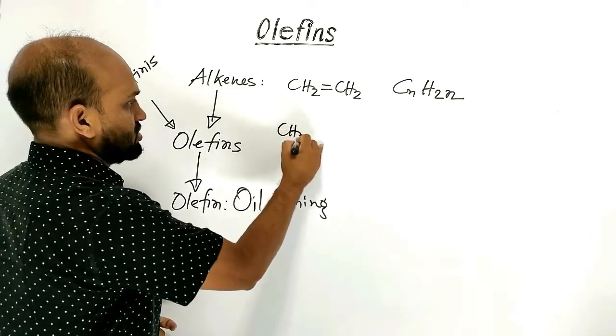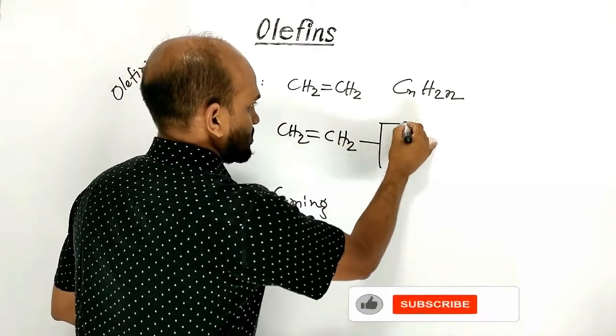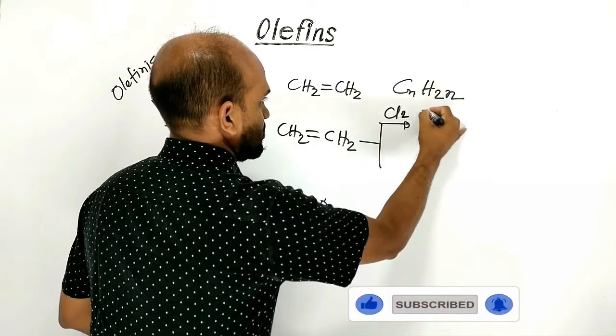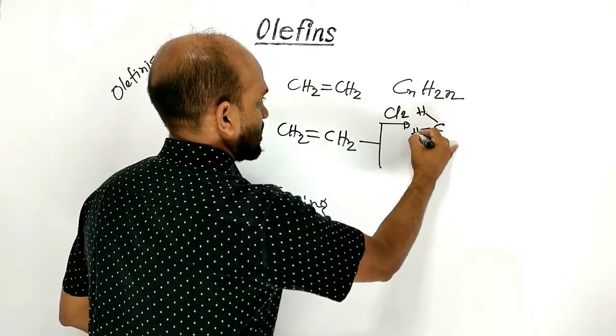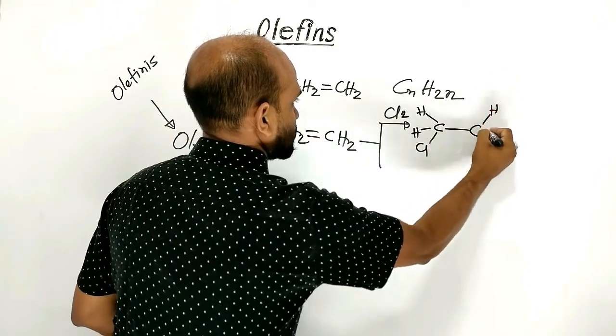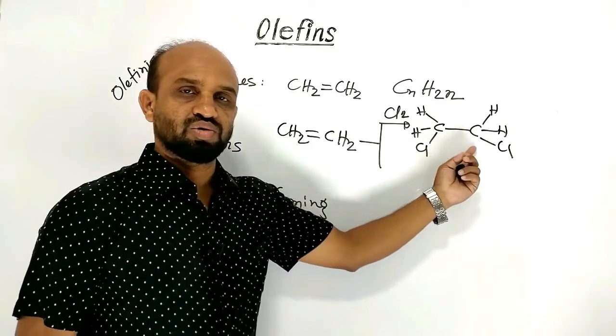Ethene reacting with chlorine forms carbon, hydrogen, hydrogen, chlorine, hydrogen, hydrogen, chlorine, bromine. 1,2-dichloroethane.